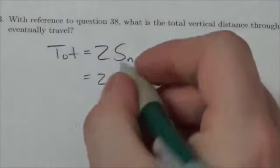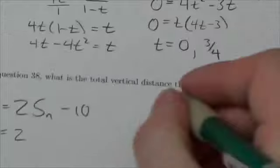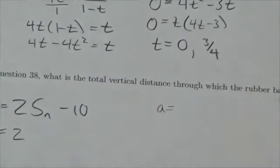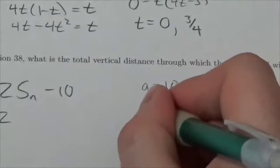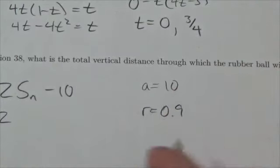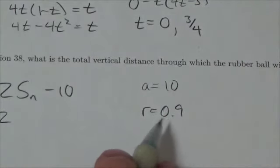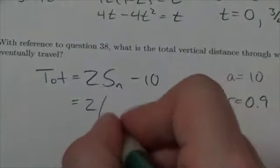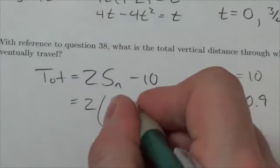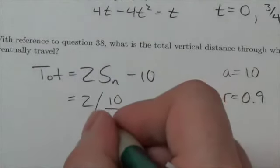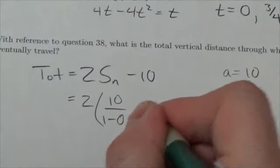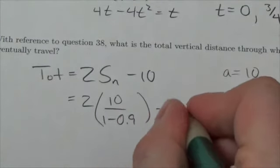so we're going to figure out how far the ball goes infinitely here. For the ball, we knew that the initial distance that it traveled was 10 and that it was always losing 10%. So the r value would be 0.9. And so this becomes 10 divided by 1 minus 0.9 and then at the end here minus 10.